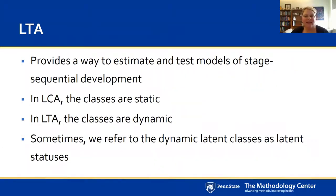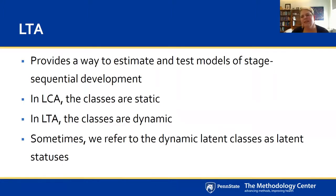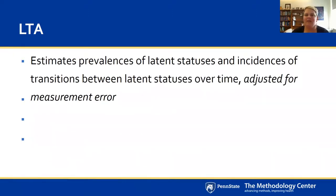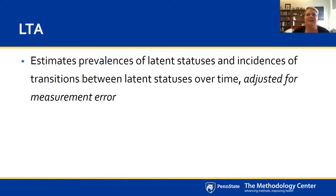LTA is a measurement model, just like LCA comes from a measurement tradition. We know there is error associated with measurement of the classes, which means there's also error associated with understanding transitions in class membership. Because it is based on stage sequential change, different individuals may take different paths. For example, an individual who starts in the non-depressed class — some might move to sadness before moving to sad-and-disliked and then depressed. LTA provides a way to estimate and test models of stage sequential development. In LCA, the classes are static; in LTA, the classes are dynamic and people are allowed to move between them over time.